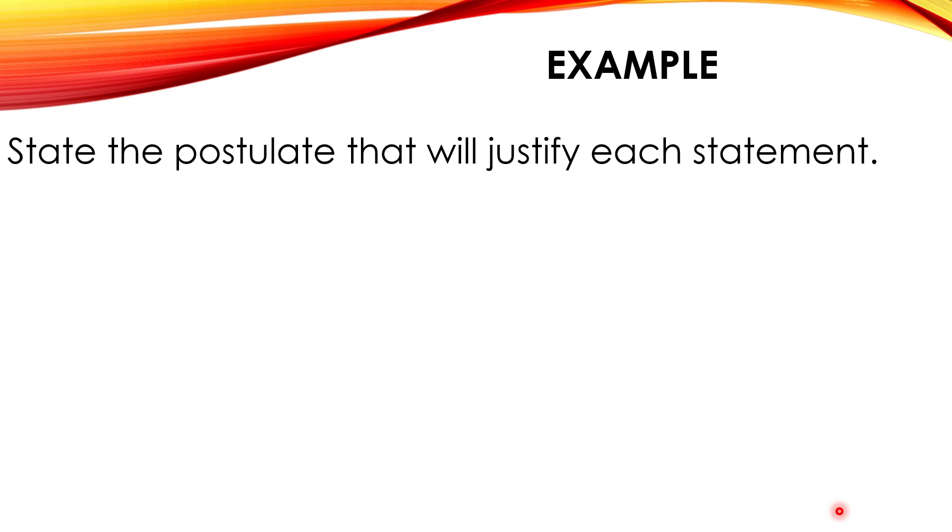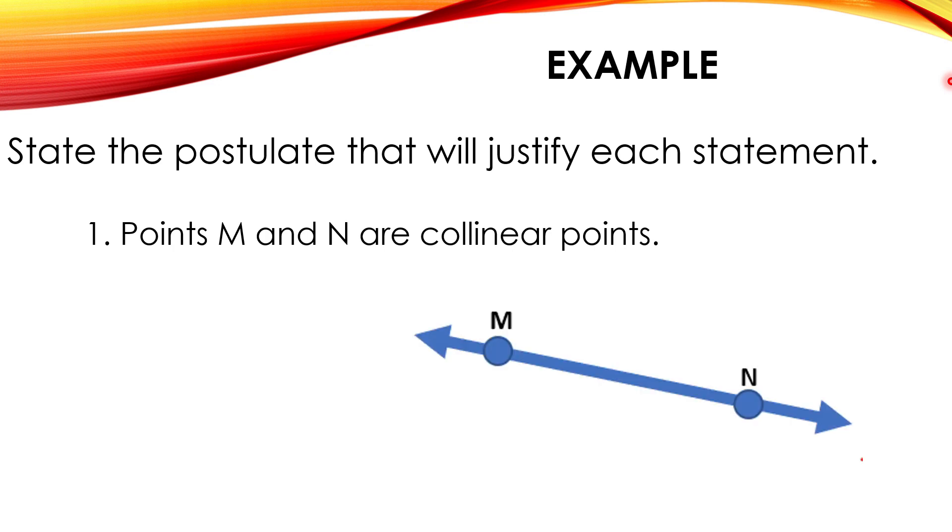So let's have another example regarding this. You are going to state the postulate that will justify each statement. I prepared 5 items for you. For number 1, point M and N are collinear points. When we say collinear, if you draw it, if you are going to connect that point, it will create a line. Therefore, the postulate is line postulate. Very good.